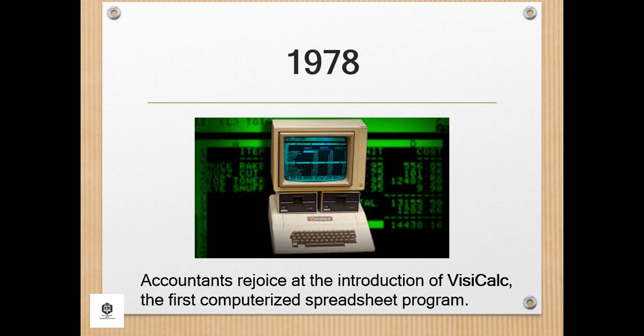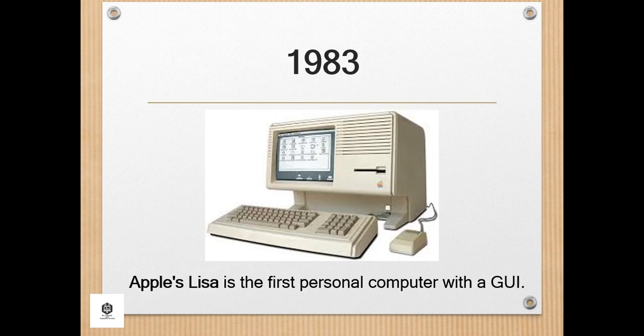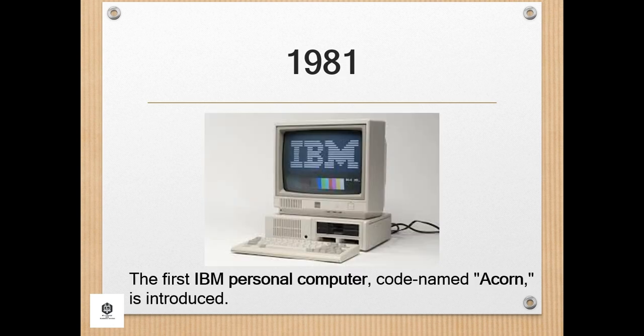During 1978, accountants rejoiced at the introduction of VisiCalc, the first computerized spreadsheet program. In 1979, word processing became a reality as MicroPro International released WordStar. In 1981, the first IBM personal computer, code-named Acorn, was introduced. It used Microsoft's MS-DOS operating system, had an Intel chip, two floppy disks, and an optional color monitor. Sears and Roebuck sold the machine, marking the first time a computer was available through outside distributors, and it also popularized the term PC.